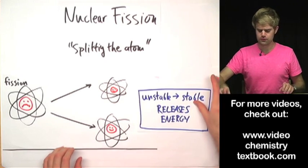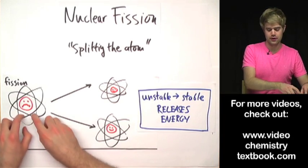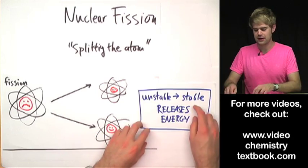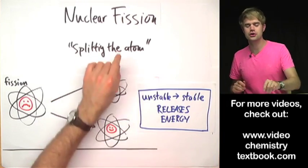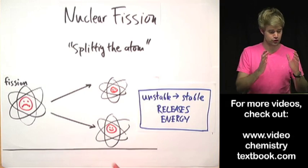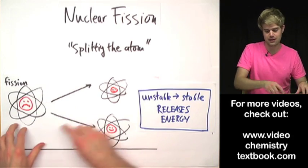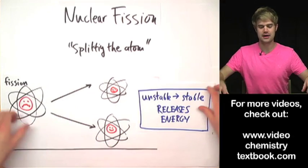Whenever we go from something that is unstable to stuff that is more stable it causes energy to be released. So that's where the energy from nuclear fission comes from, from the transition from unhappy or unstable to happy and stable.